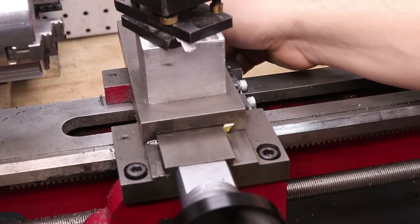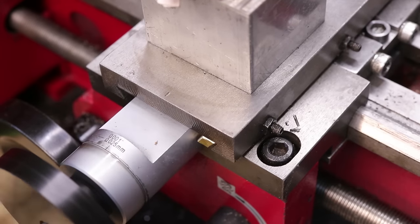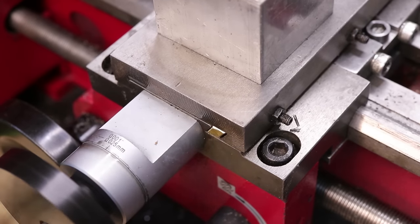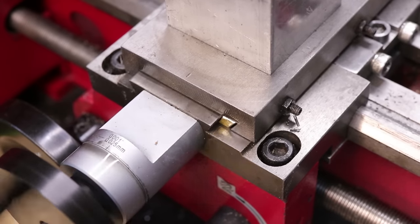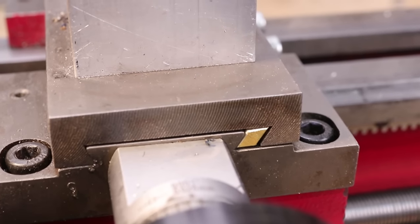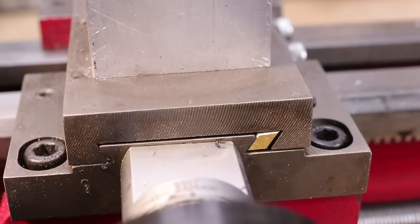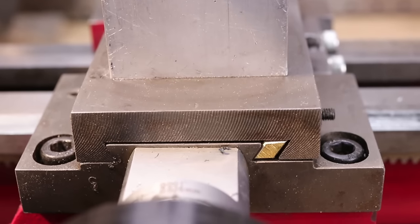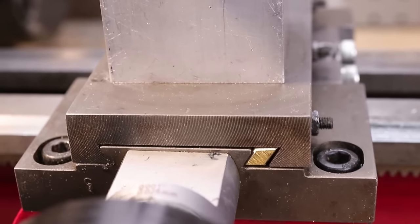Using a small needle file, I filed a small chamfer into the ends to help it install more easily. Unlike the stock gib, the new brass one makes full contact with each surface of the dovetail and has less of a tendency to roll unlike the old one. The brass material makes a very smooth action.